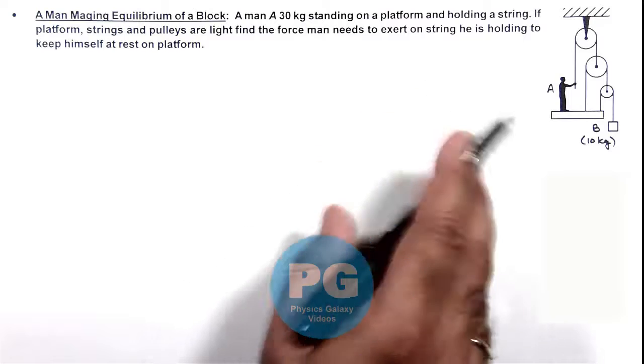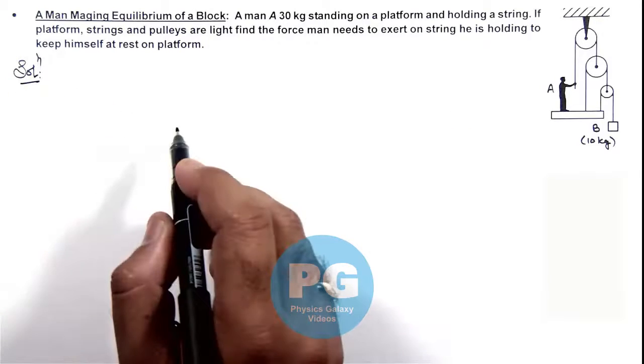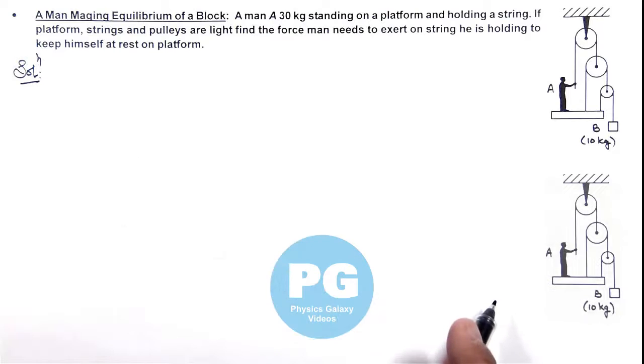To analyze this situation, let us first distribute the tensions and all forces on the system. Now we'll look on this figure where if we consider the tension in the string supporting block B is T.